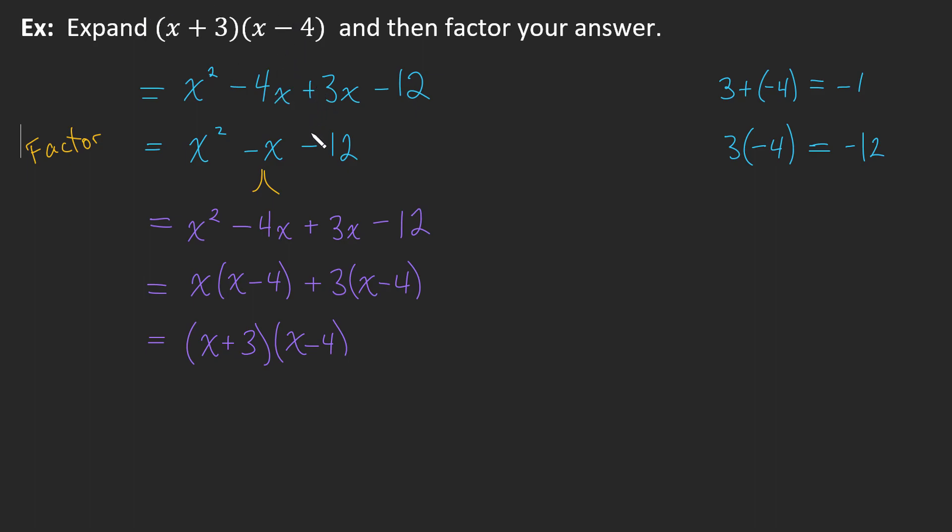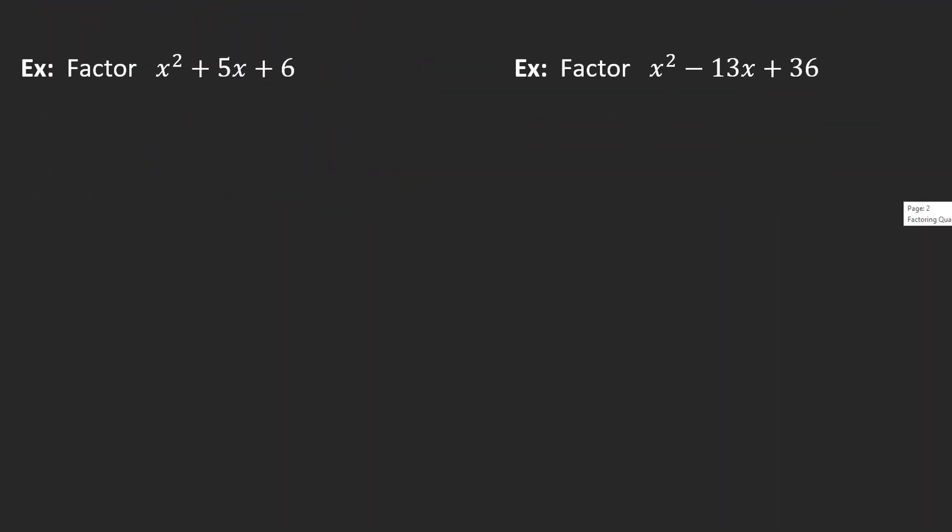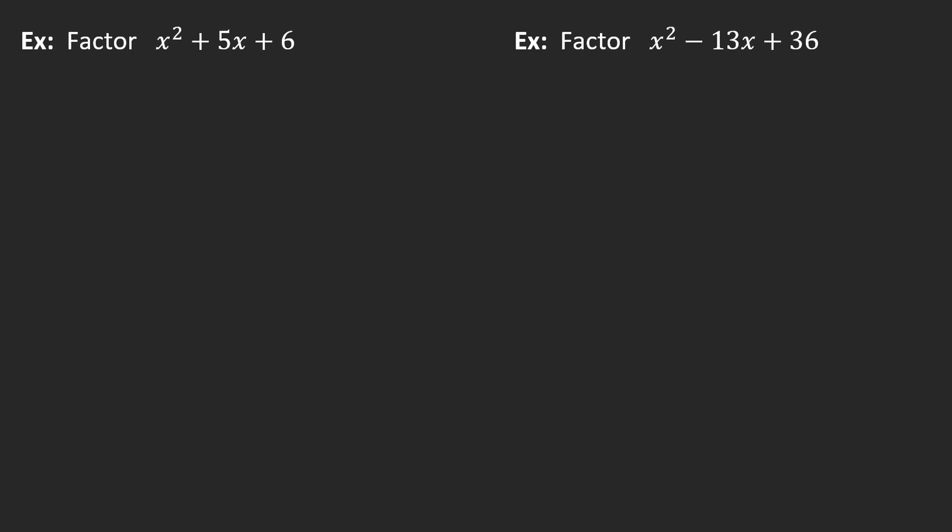So what we're going to be doing is we're going to be doing a trick. We're going to be coming up with a sum or two numbers that add to a particular number and a product or two numbers that multiply to a particular number. We're going to be looking for the sum that comes to the middle term here or the b and a product that comes to the c at the end here. So let's practice this a few times. Okay, let's focus on the left hand one here.